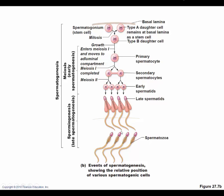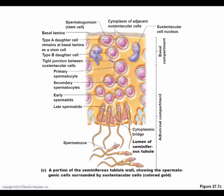Sertoli cells secrete two hormones: inhibin, which inhibits sperm production, and androgen-binding protein. The tight junctions between Sertoli cells keep them close together and prevent invasion by immune cells like antibodies. Sertoli cells do not divide — they form the permanent wall of the seminiferous tubule, supporting spermatogonia through the process of becoming spermatozoa.